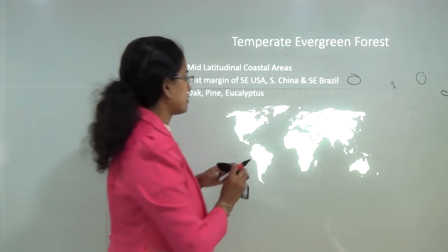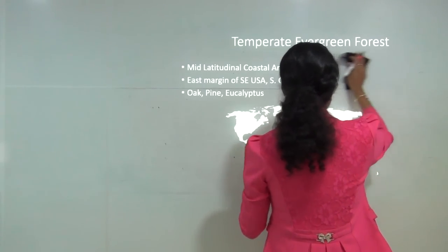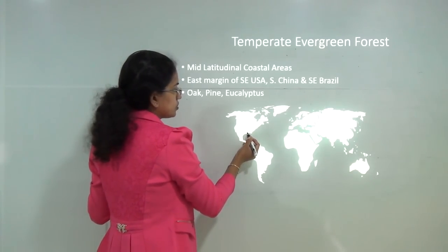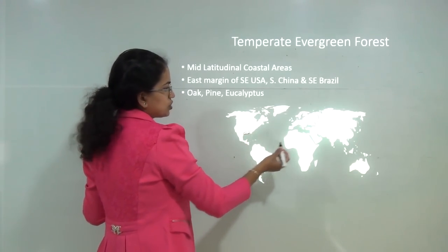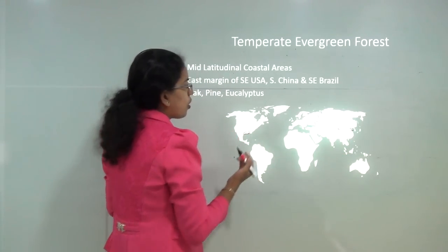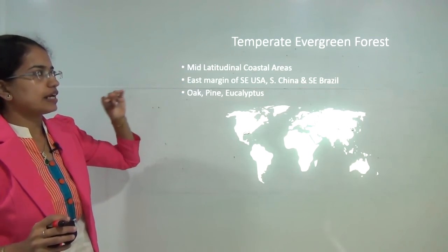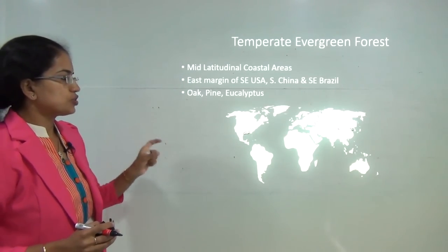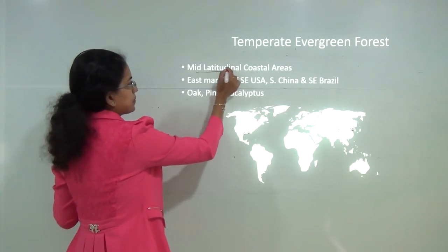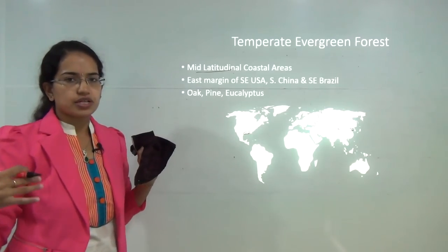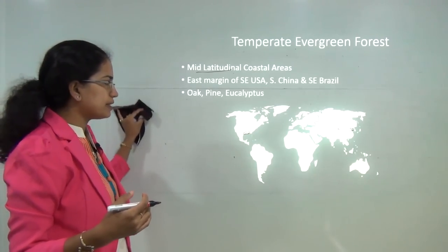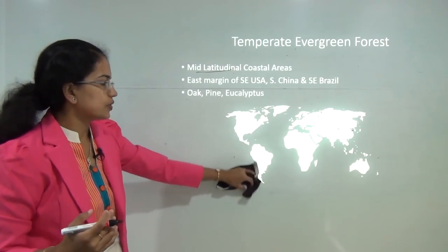Next is temperate evergreen forest. This is again evergreen but lies in the temperate zone. It is found in the eastern margins of southeast USA, south China, and southeast Brazil. All these regions have temperate evergreen forests, usually on the coastal margins of the mid-latitude region — from 23 and a half to 66 and a half degrees — towards the coastal areas. Common vegetation includes oak, pine and eucalyptus.